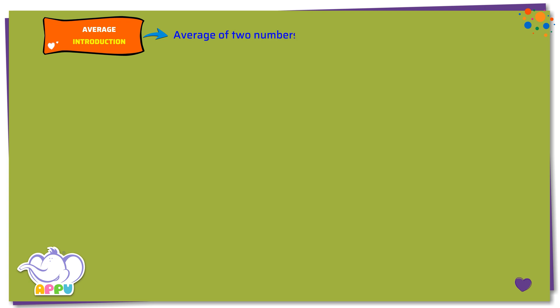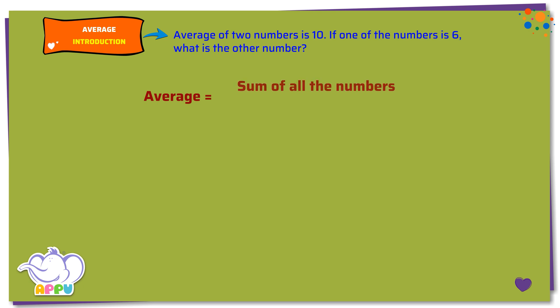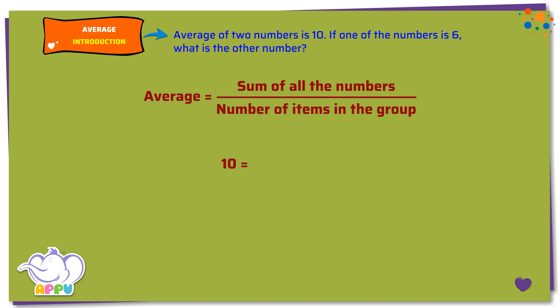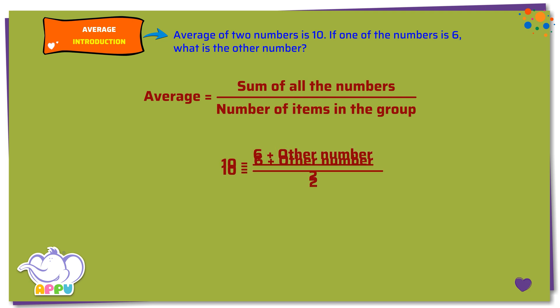Average of two numbers is 10. If one of the numbers is 6, what is the other number? We know that average equals sum of all the numbers by number of items in the group. We know the average is 10. We also know that one of the numbers is 6 and the other number is unknown. Number of items in the group is 2. So 10 equals 6 plus other number by 2.